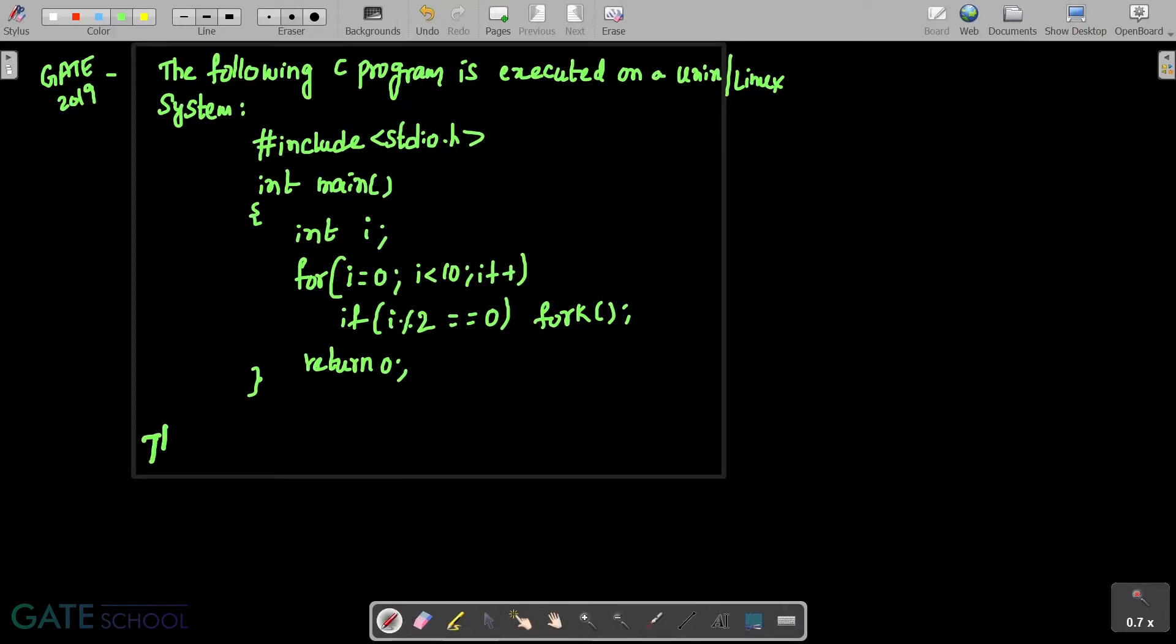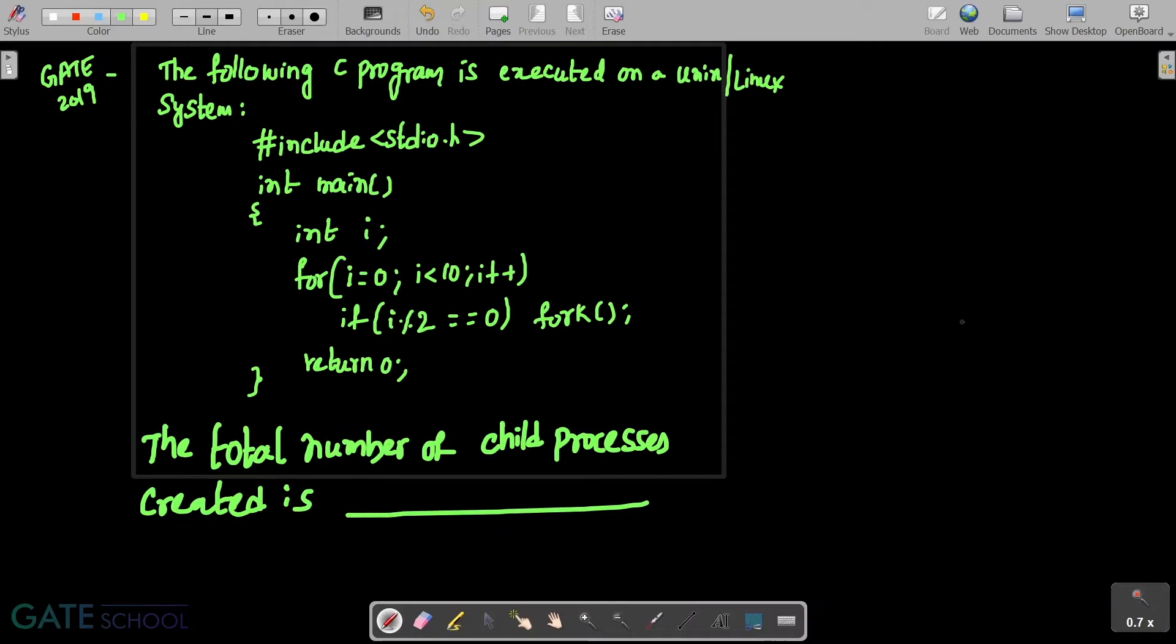The total number of child processes created is ___. So this is the given GATE question. First of all, understand this one clearly.